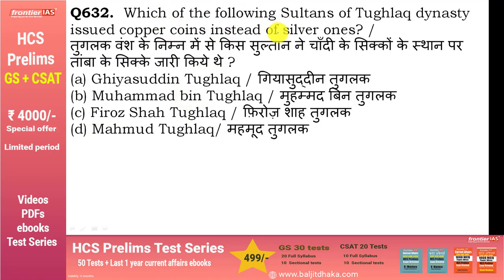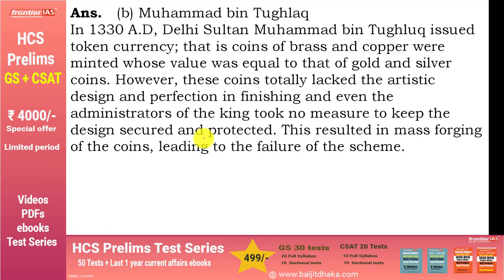Which Sultan of Tughlaq dynasty issued copper coins instead of silver ones? Answer है Muhammad bin Tughlaq। चांदी की कमी थी तो उन्होंने copper coins issue किए, लेकिन coins की quality अच्छी नहीं थी तो कोई भी इसकी नकल कर लेता था। Counterfeit currency start हो गई और यह scheme एक massive failure रही।